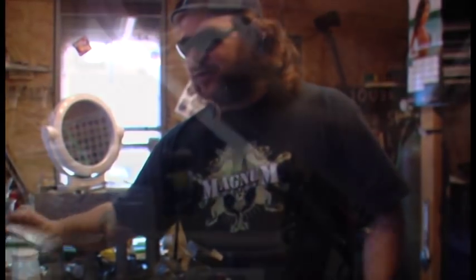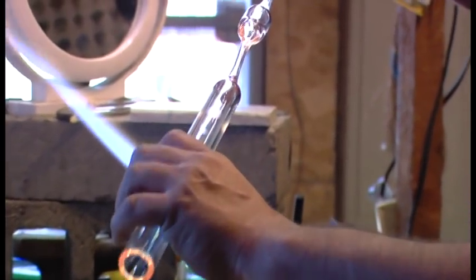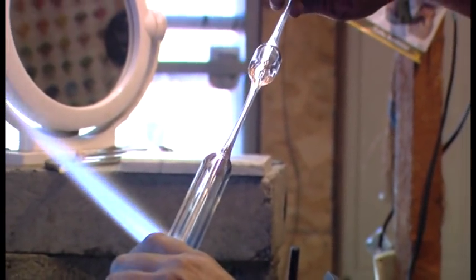We use borosilicate glass, which is a little bit harder glass. This is a tube. We use millimeters. This is 25 millimeter by 4 millimeters thick.